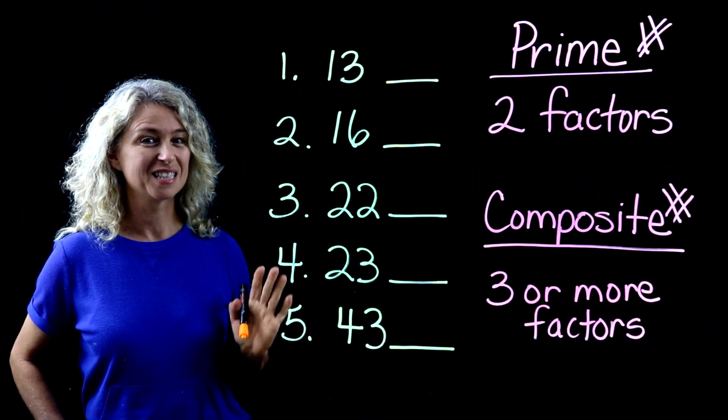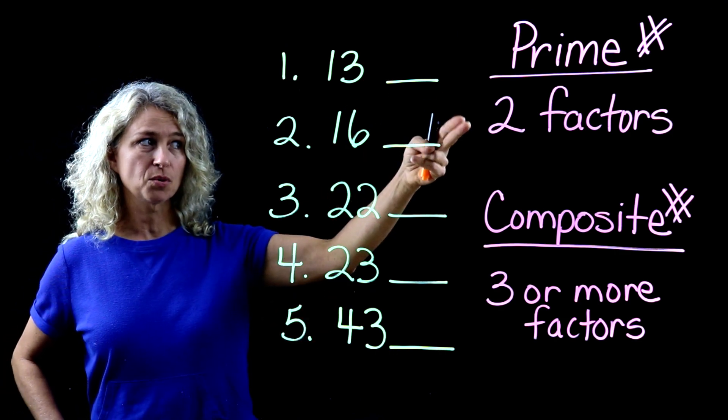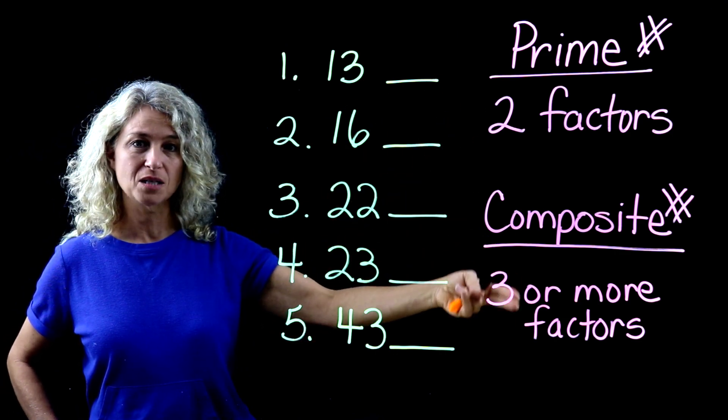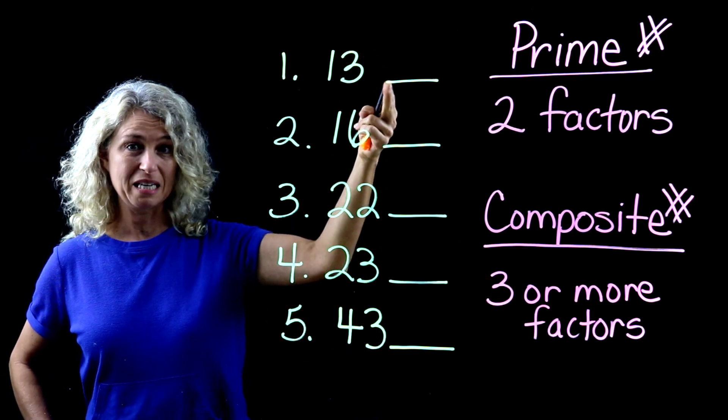So in recapping what we've learned today, prime number has two factors, composite number has three factors or more. Let's determine whether these are a C or a P.